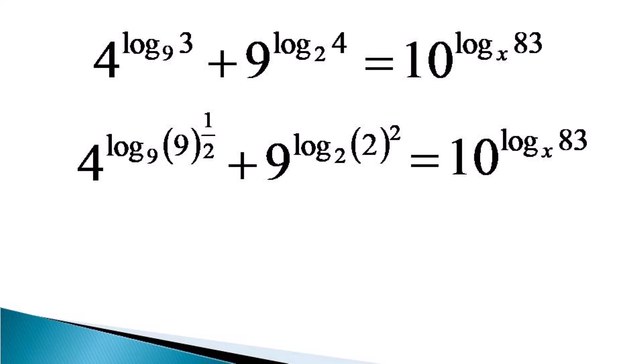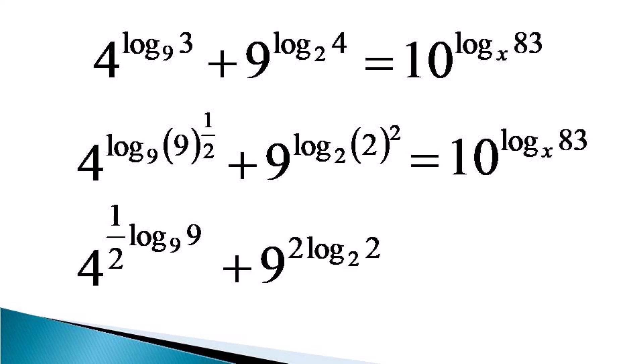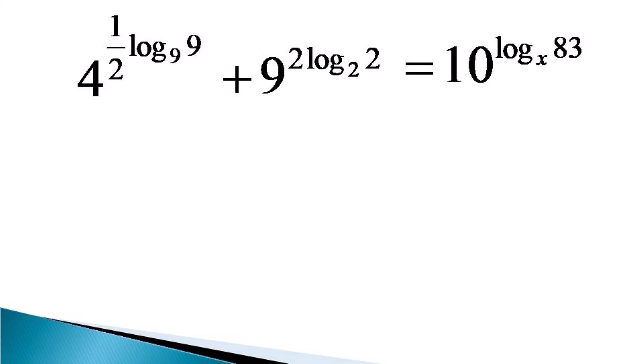Again, we manipulate the first term on the left hand side using the power law of logarithms. It becomes 4 raised to the power half log 9 to the base 9, and for the second term, applying the power law gives 9 raised to the power 2 log 2 to the base 2, which is equal to 10 raised to the power log 83 to the base x.